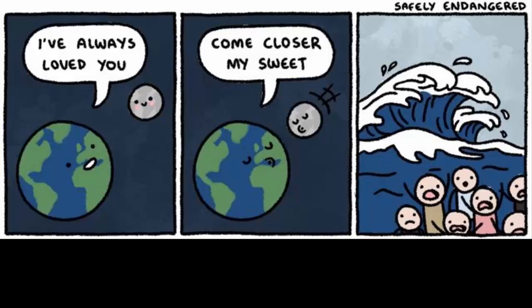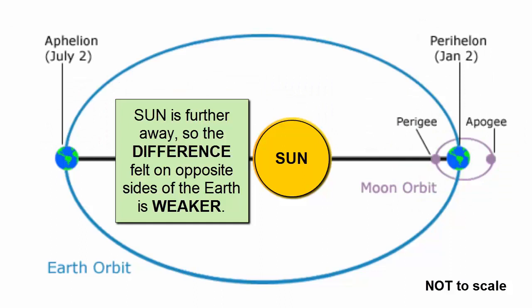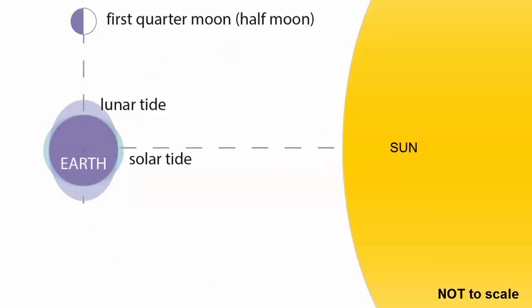This cartoon says the same thing in a much more clever way. The Sun is a much more massive body than the Moon. However, because it is so far away from the Earth, the differences experienced on the near and far sides are much, much smaller than those produced by the Moon.